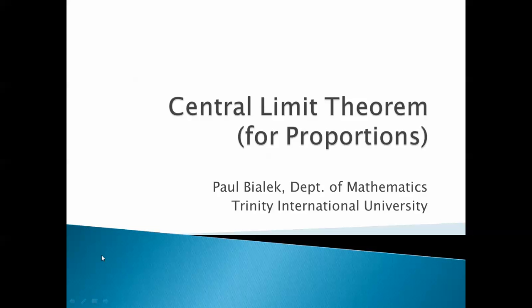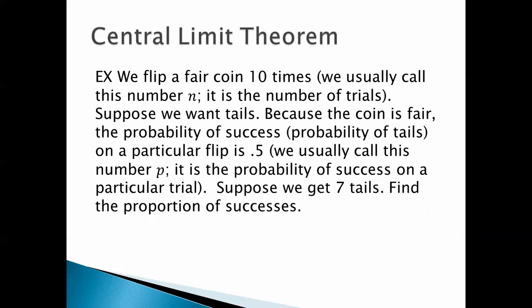Let's look at the central limit theorem for proportions. We flip a fair coin 10 times. We usually call this number n — it's the number of trials. Suppose we want tails for some reason. Because the coin is fair, the probability of success, that is the probability of tails in a particular flip, is 0.5. We usually call this number p — it's the probability of success in a particular trial.